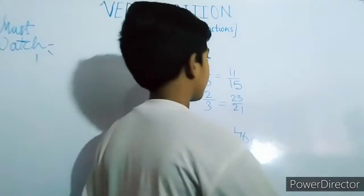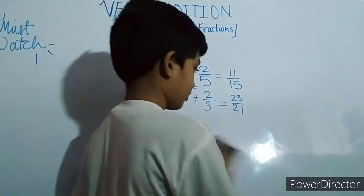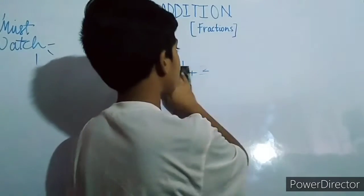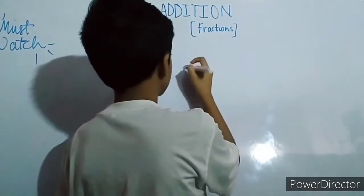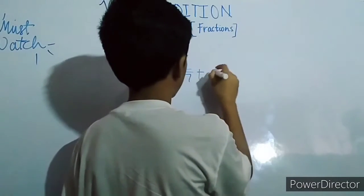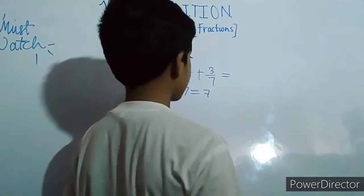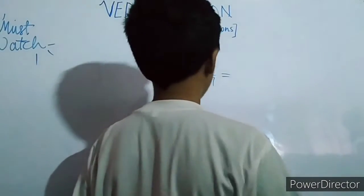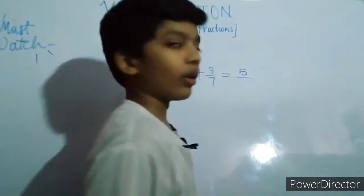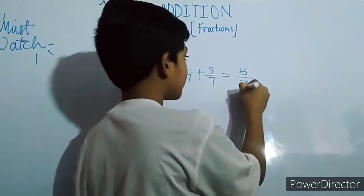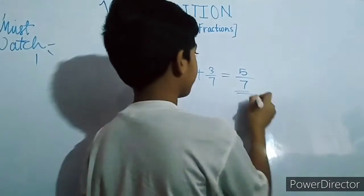This is our type number one. Now let's go to type number two. Type number two is the denominators are same but the numerators are different. Two by seven plus three by seven — here seven equals seven, the denominator is same. So what you do is just add the numerators: two plus three. Write the same denominator, and you get five by seven.